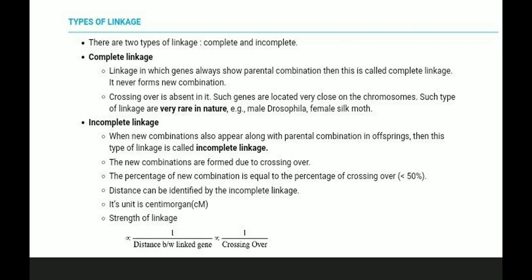Now, the two types of linkage are complete linkage and incomplete linkage. Complete linkage is when genes always show parental combination. It never forms new combinations. Crossing over does not occur between very closely located genes, making complete linkage very rare in nature — examples include male Drosophila and female silk moth.